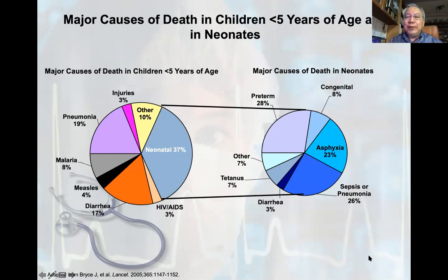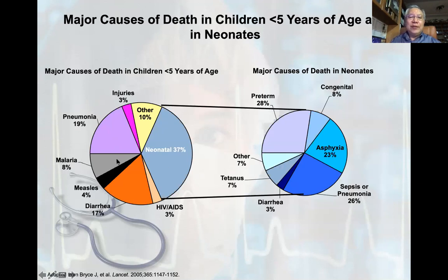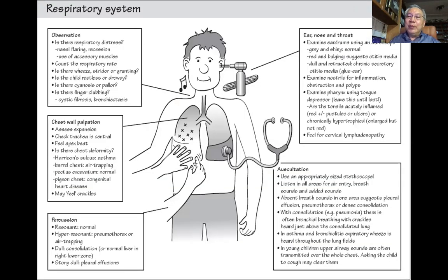If you recall, I talked about the major causes of death in children less than five years of age, and pneumonia accounts for about 20% or more. So the respiratory system is very important. If you go into private practice and run a GP clinic, you'll find that children with cough, cold, or respiratory problems make up a major part of your clientele.